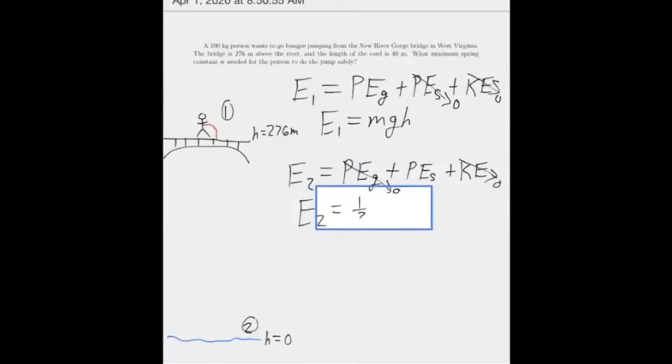So that means that energy to E2 is just equal to the potential energy from the spring, which is going to be one half K X squared. So those are our expressions.